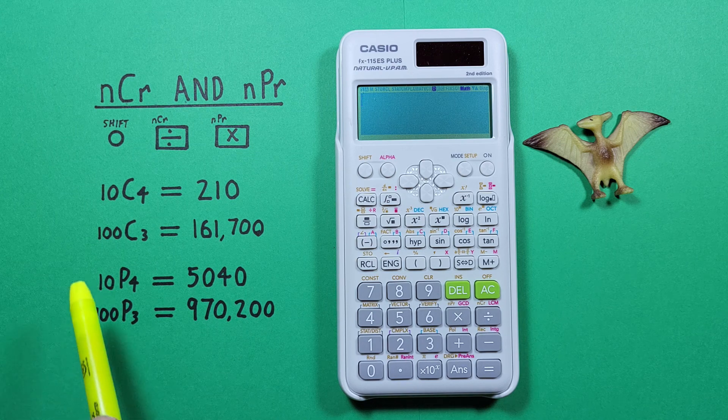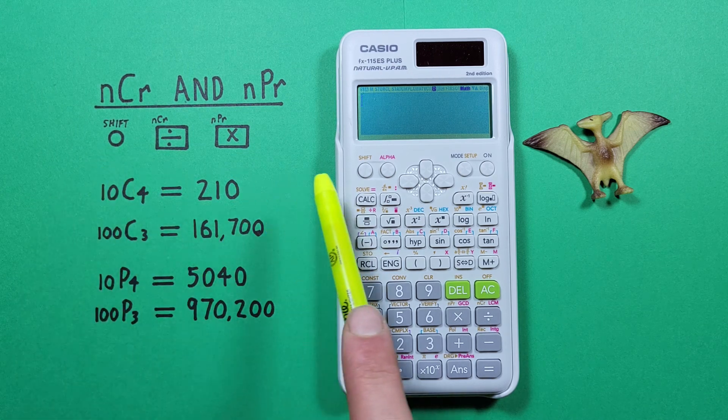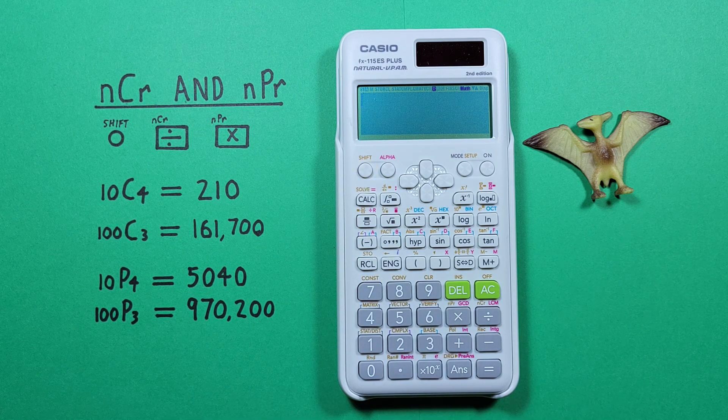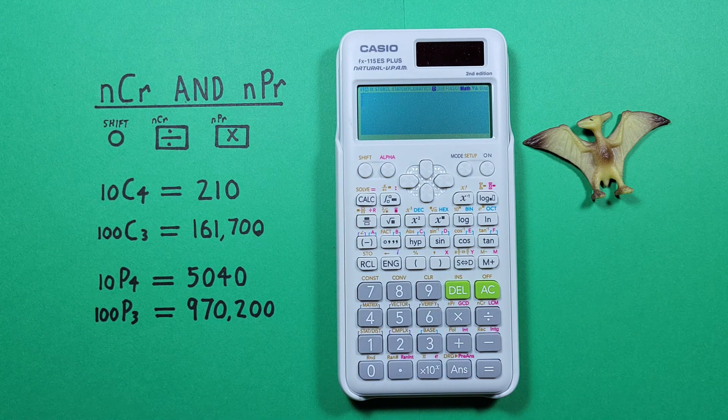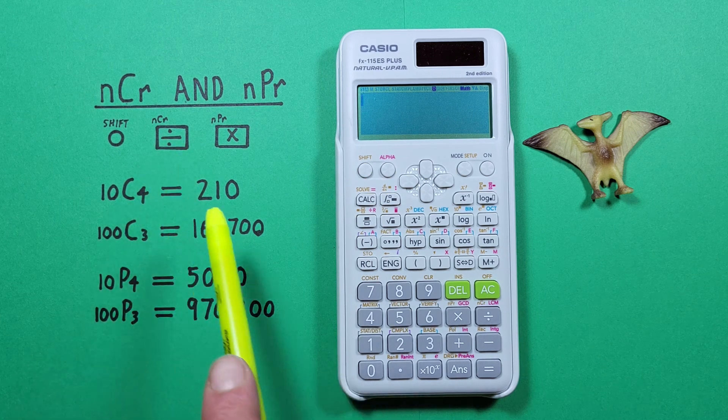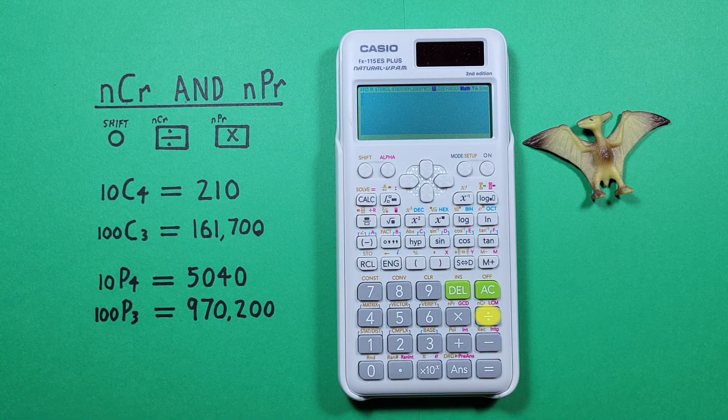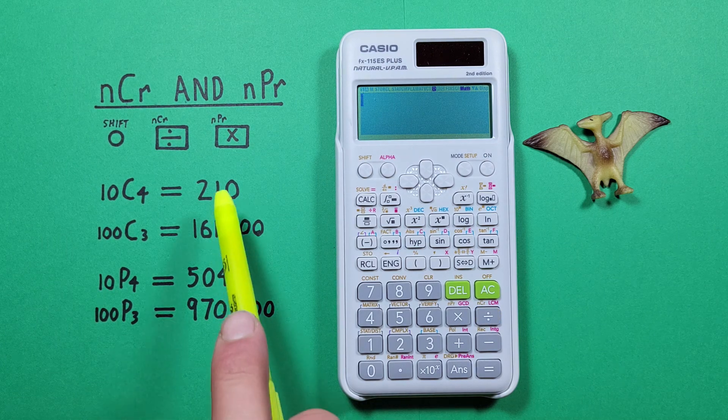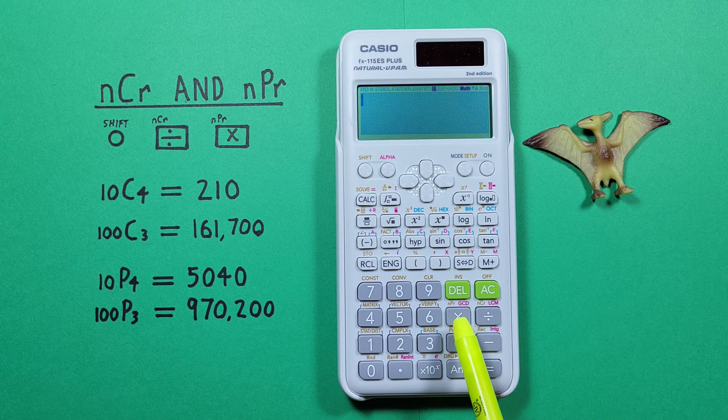To do that, we'll use the shift key that looks like this located here, the division key with the shift function of combination that looks like this located here, and the multiplication key with the shift function of permutation that looks like this located here.